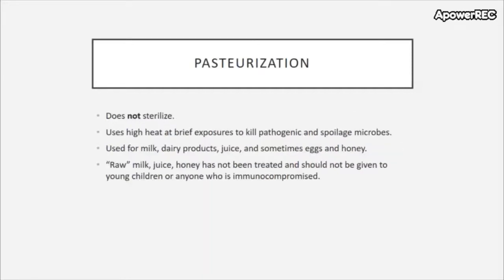Louis Pasteur developed a process called pasteurization, which does not sterilize but uses high heat at brief exposures to kill pathogenic and spoilage microbes. It's used for milk and dairy products, juice, and sometimes eggs and honey. Raw milk, juice, and honey that has not been treated should not be given to young people or those who are immunocompromised, as they could contain bacteria harmful to those individuals.